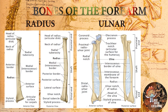Now we are going to talk about the bones of the forearm region. The forearm region has two bones: the radius and the ulna. In the anterior view of the radius we can see the head of the radius, the neck of the radius, the radial tuberosity, the medial surface, the styloid process, and the articular surface for carpal bones.